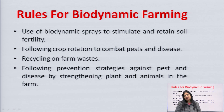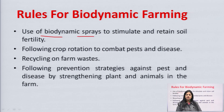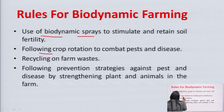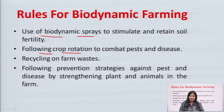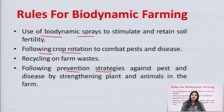There are certain rules for biodynamic farming. Number one is the use of biodynamic sprays to stimulate and retain soil fertility — the very basic purpose being to retain soil fertility naturally, without the use of chemical agents or pesticides. The next rule is following crop rotation to combat pests and disease. Another rule is the recycling of farm waste — whatever the farm waste, it is recycled and added back to the soil to enhance fertility. It also follows prevention strategies against pests and disease by strengthening the plants and animals on the farm.